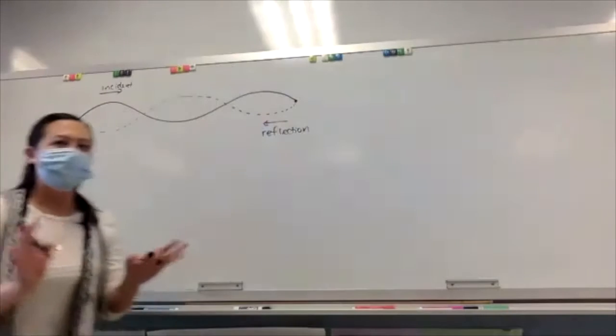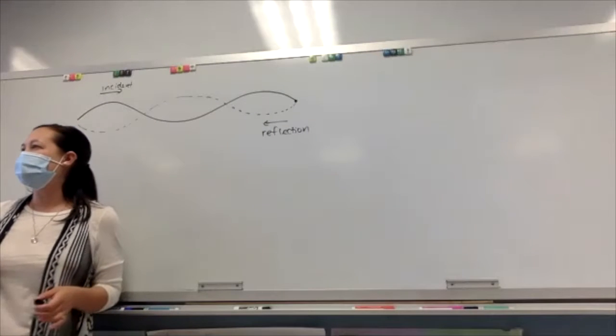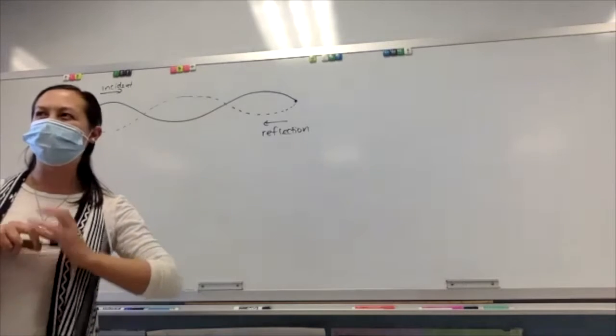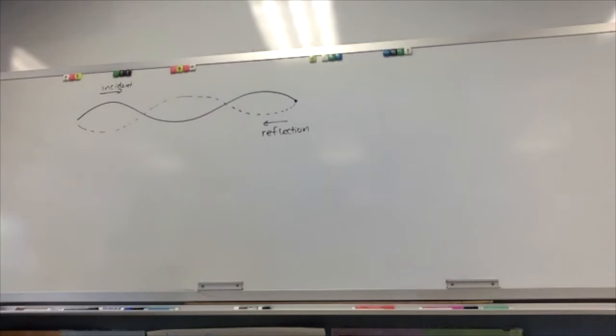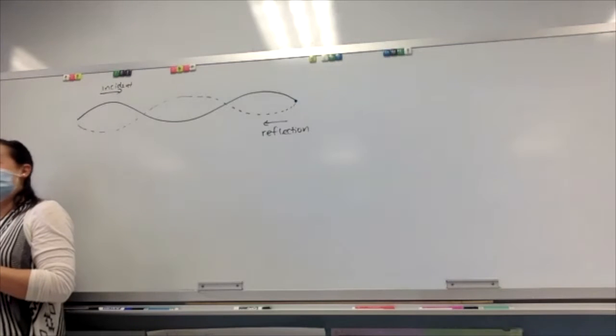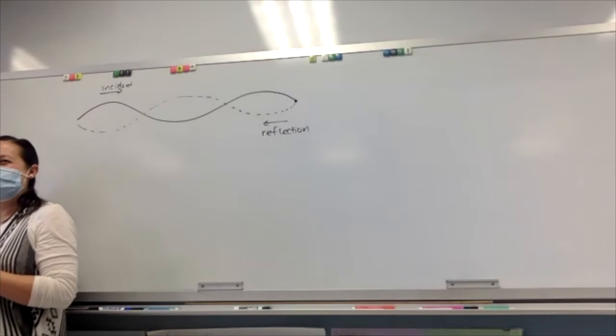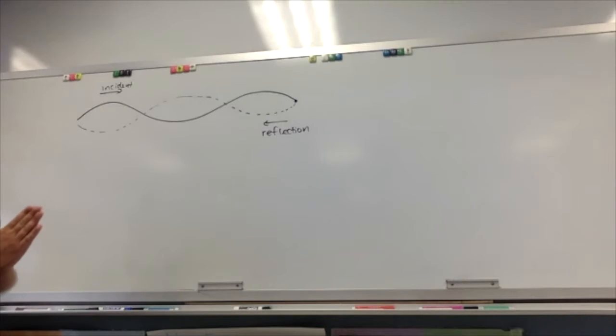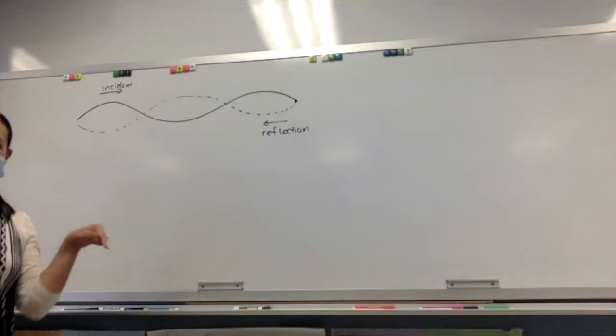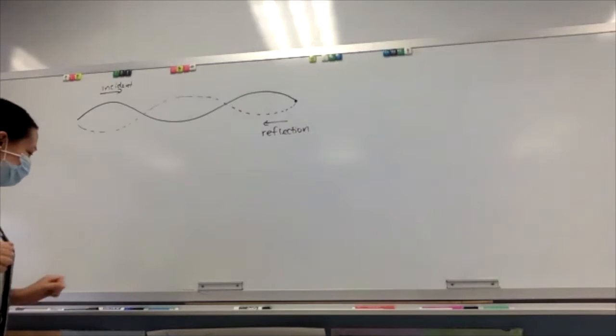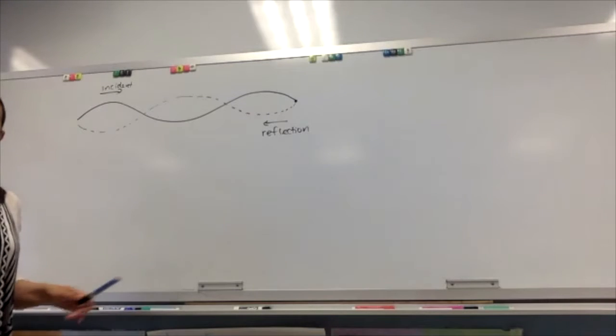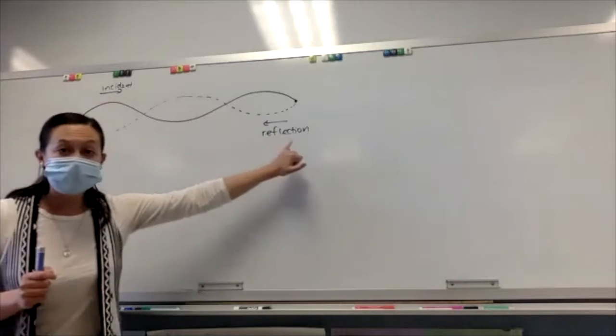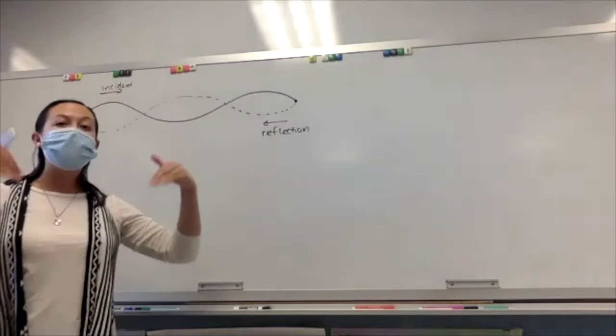But then I have two waves on the same string. What happens when you have two waves in the same medium at the same time? What is that called? It begins with an I. Interference. Two waves of the same string at the same time is interference. And so what actually happens in a standing wave is you have an incident wave and a reflected wave that interfere with each other.